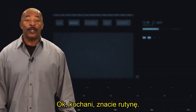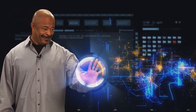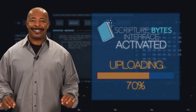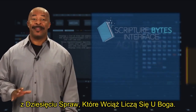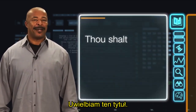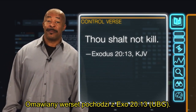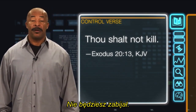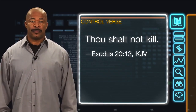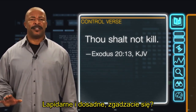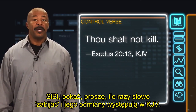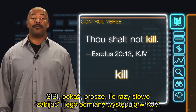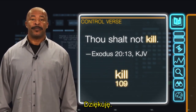CB, please upload our control verse for the sixth matter of the 10 matters that still matter to God. Our control verse comes from Exodus chapter 20, verse 13 in the King James version: 'Thou shalt not kill.' Terse and tense. CB, please show how many times the word kill and its variants are found in the King James version.